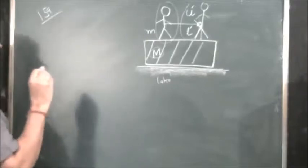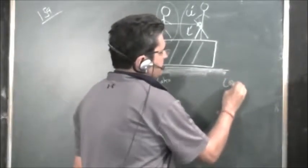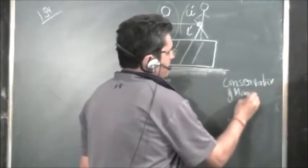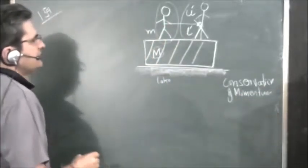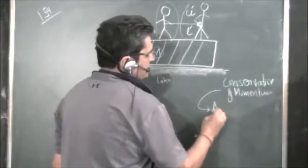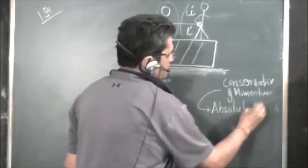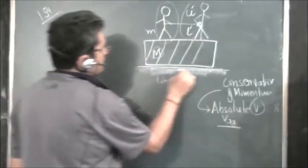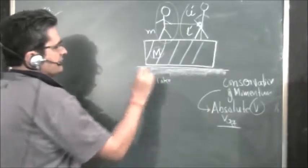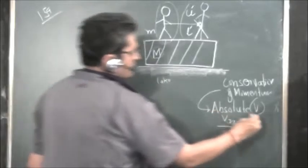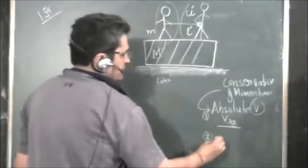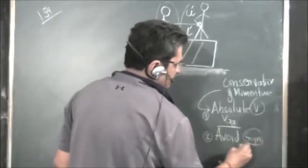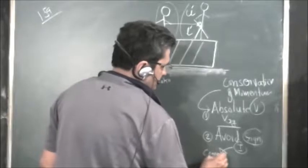In such problems, keep two or three things in mind. This is based on conservation of momentum. When you are applying conservation of momentum, always take the absolute velocities — means velocity with reference to the ground, a stationary frame. Do not take relative velocity with reference to a moving frame. Also, avoid pre-assigning a positive or negative sign; let the sign come naturally from the solution.